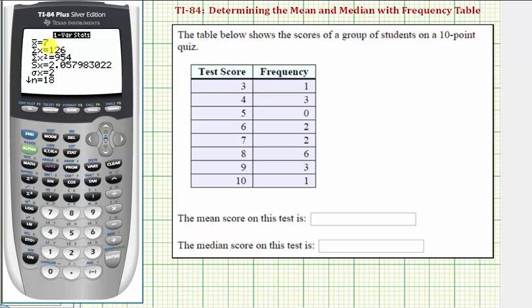X bar is equal to the mean, so our mean is seven. To find the median, we have to scroll down. MED stands for median, so the median is eight. So again, the median is eight, and the mean or average is seven.